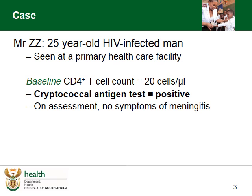Let us start by outlining a typical patient visiting his primary healthcare clinic. Mr. ZZ is a 25-year-old man who tests positive for HIV at his local clinic, and the professional nurse takes a routine CD4 count as a baseline test. On returning a week later, they find that the CD4 count is only 20 cells per microlitre.